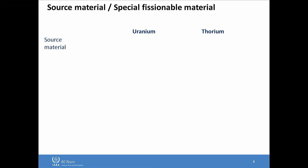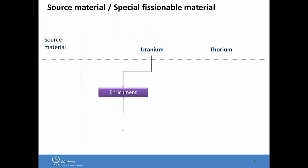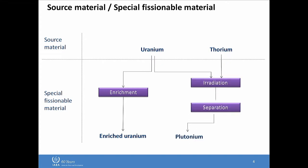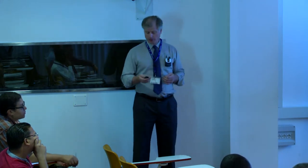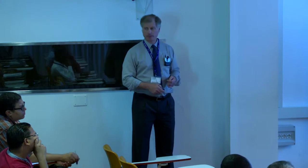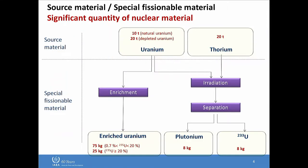It's not just about the nuclear material — we also safeguard the facilities where nuclear materials are located. Enrichment is a very sensitive stage of the nuclear fuel cycle. Likewise, for uranium and thorium, you can use an irradiation path — put it in a reactor — and then you need to separate it because it still has fission products, actinides, and other things you have to remove in order to have plutonium and uranium-233. Ultimately you need these materials in metallic form. Keep the significant quantity for plutonium — 8 kilograms — in mind.